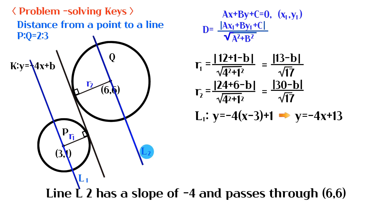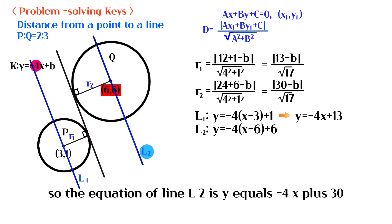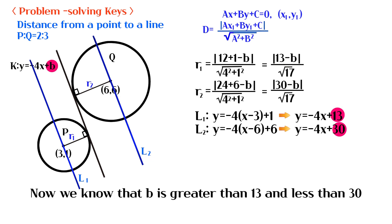Line L2 has a slope of negative 4 and passes through (6,6). So the equation of line L2 is y equals negative 4x plus 30. Now we know that B is greater than 13 and less than 30.